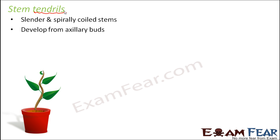Stem tendrils develop from axillary buds. Axillary buds are the buds present at the axil of a leaf. Stem tendrils also develop from these axillary buds. Basically, a stem tendril is nothing but a modified branch, as it develops in place of a branch. From an axillary bud, what normally happens is it gradually grows to form another branch, which will again bear leaves, fruits, and flowers. So instead of that branch, we actually have a stem tendril — a stem tendril is a modified branch.